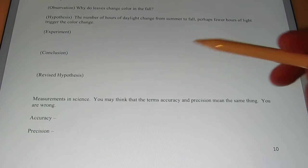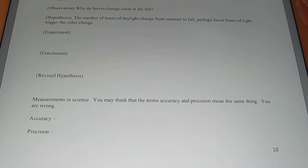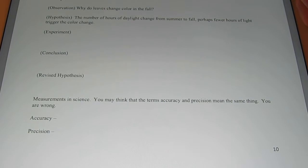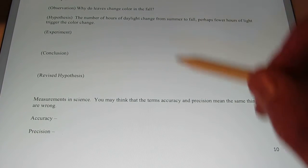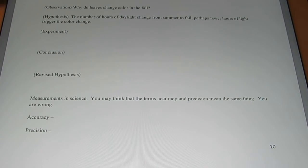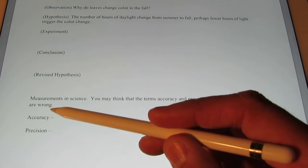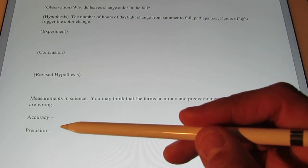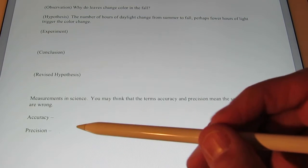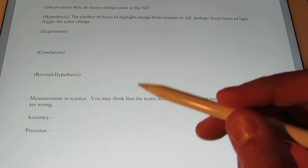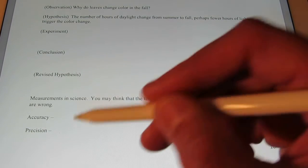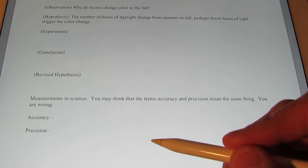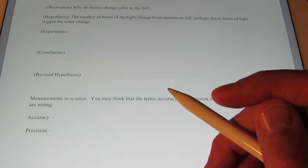All right, welcome back boys and girls. Today we're going to talk about making measurements in science and we're going to talk about two vocabulary words that you might think are the same, but they're actually different to scientists. They are accuracy and precision.